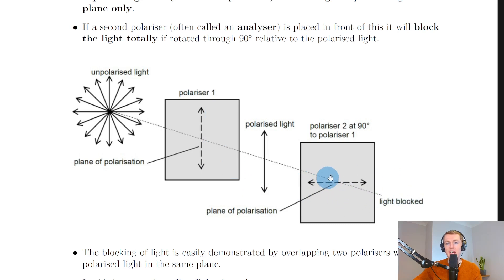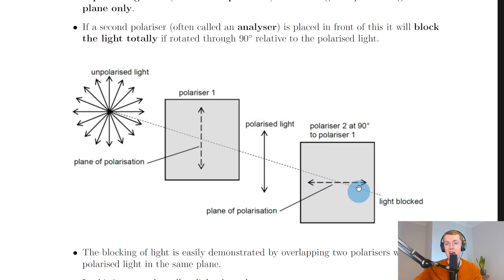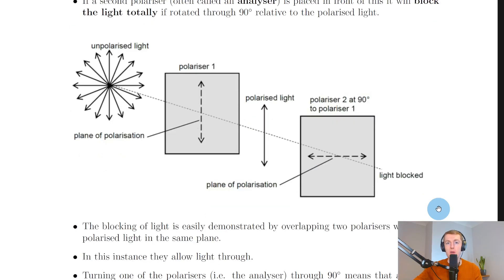That's because the analyzer will only let light through in the horizontal plane whereas the polarized light was in the vertical plane, so we're not going to see any light at that point. If you were then to rotate the analyzer through another 90 degrees, we would get back to maximum brightness.